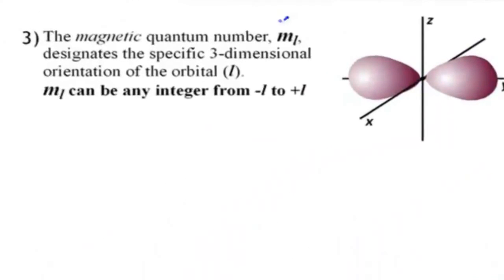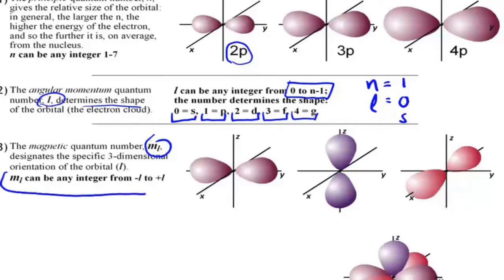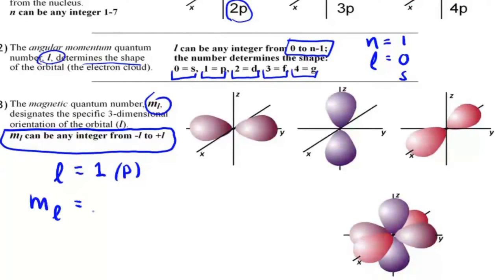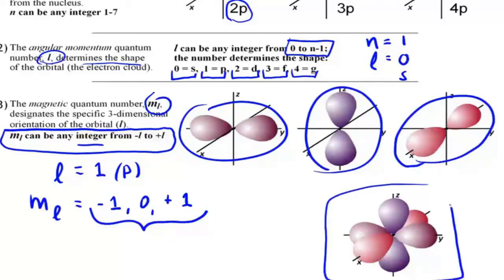The third quantum number is the magnetic quantum number, m sub l. The three p orbitals exist in different orientations in three-dimensional space, and that is what m sub l tells us. m sub l can be any integer from negative l to positive l, and each integer represents a different orientation in space. For example, if l equals 1 (p), then m sub l can be negative 1, 0, and positive 1 — a total of three values, exactly how many orbitals we find in the p subshell. These three orbitals are oriented perpendicular to each other on the x, y, and z axes.